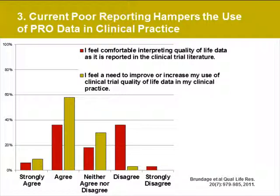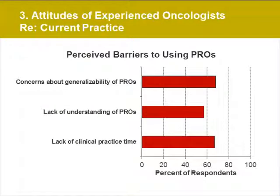However, the same experienced oncologists often do not feel comfortable interpreting quality of life data from these clinical trials, as illustrated by the red bars, with many to the right of the neutral response. Some clinicians also feel the need to improve their use of PRO data in practice, as shown by the green bars to the left of neutral. Further explanation of barriers and facilitators include their concerns about the generalizability of PROs — that is, are the right measures being used for the patients and treatments in my practice?